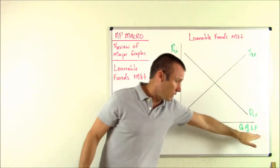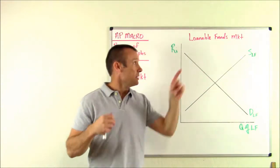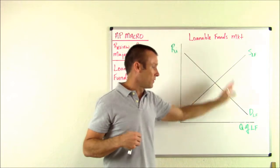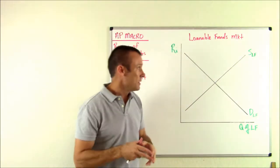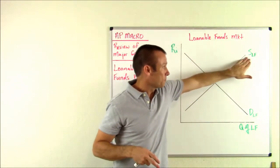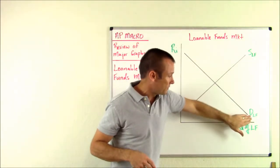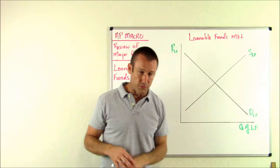Straightforward — if it said t-shirts, we would have a quantity of t-shirts. It says loanable funds, so we've got the quantity of loanable funds on the horizontal axis. Next, we've got the supply of loanable funds and the demand for loanable funds.